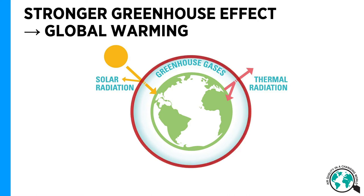Humans have increased the concentrations of some of these greenhouse gases in the atmosphere, and this strengthens the greenhouse effect. The more greenhouse gases we have in the atmosphere, the stronger is the greenhouse effect that warms the surface. You could think of a blanket around the Earth — the thicker the blanket is, the warmer it is below it.